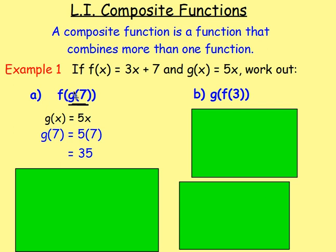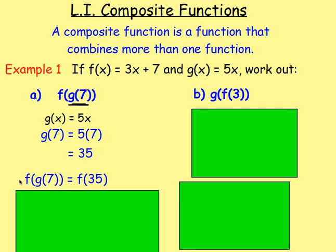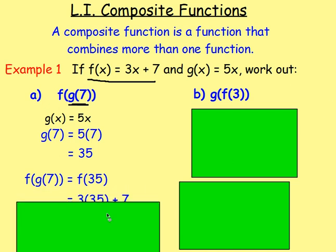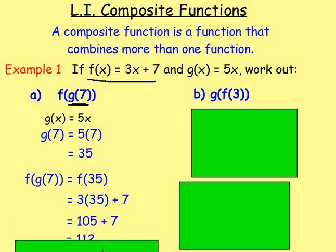Now we know g(7) = 35, so f(g(7)) becomes f(35). We're now looking at function f and replacing x with 35. So instead of 3x we have 3 times 35 plus 7. That gives us 105 plus 7, which is 112. And that is f(g(7)).